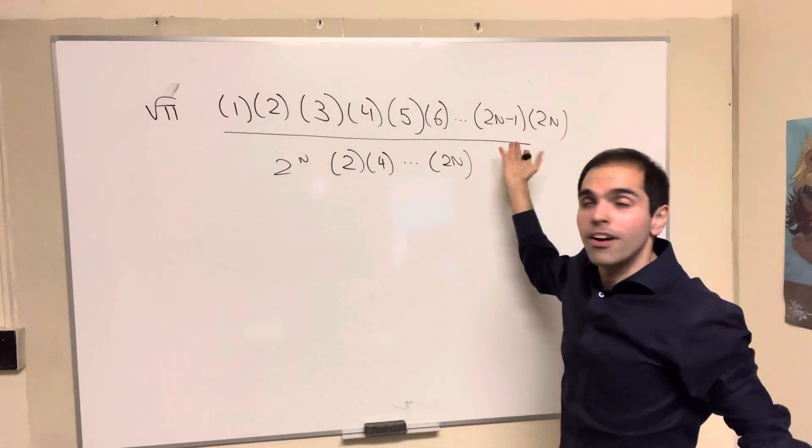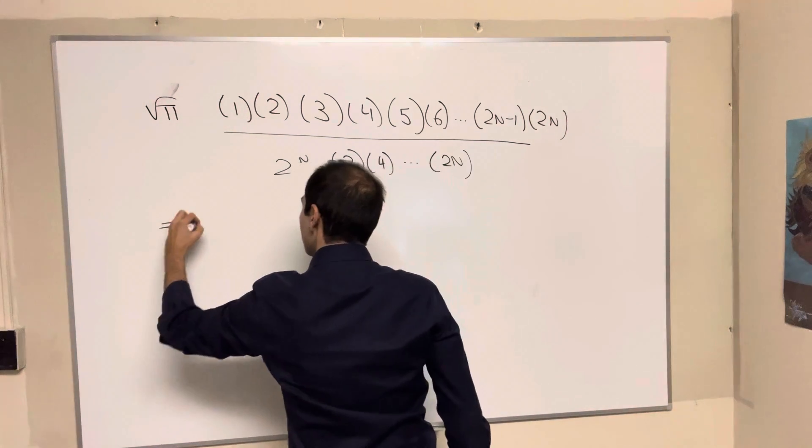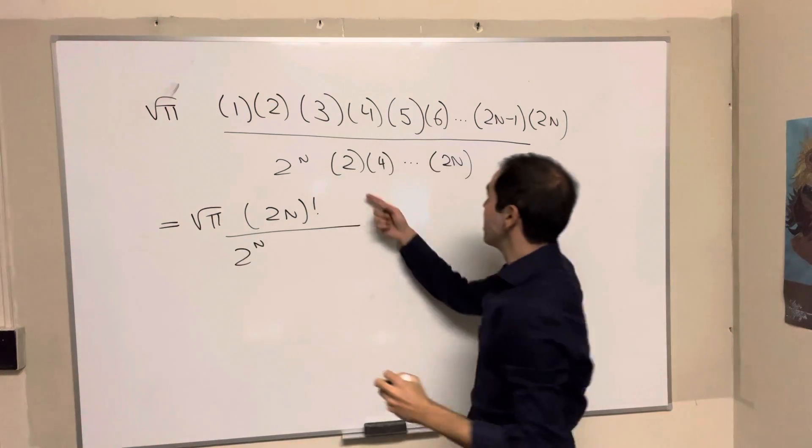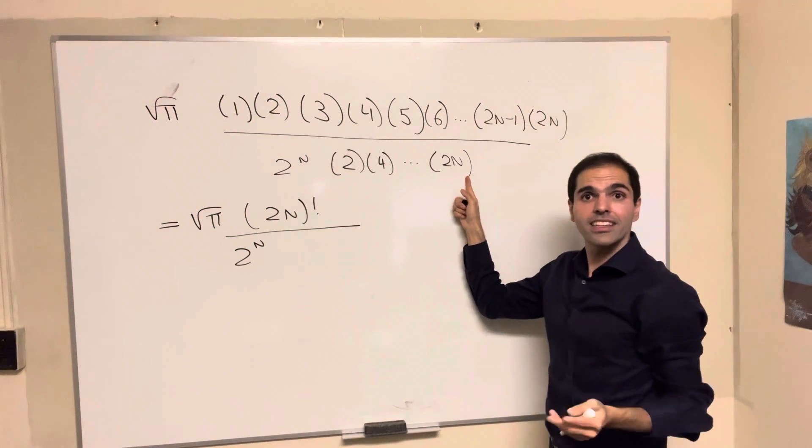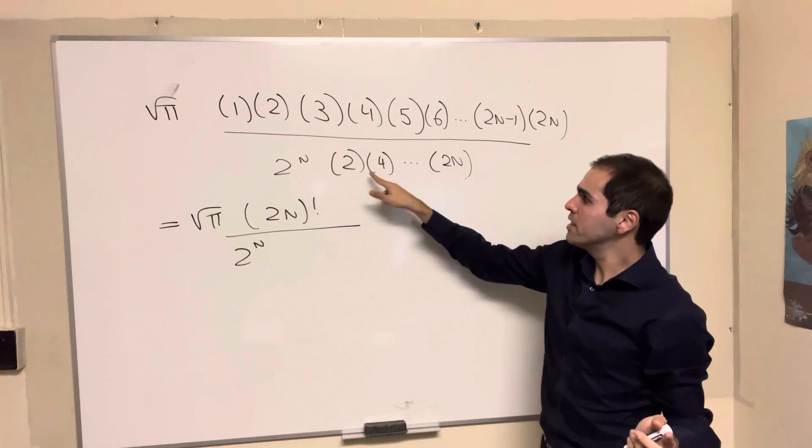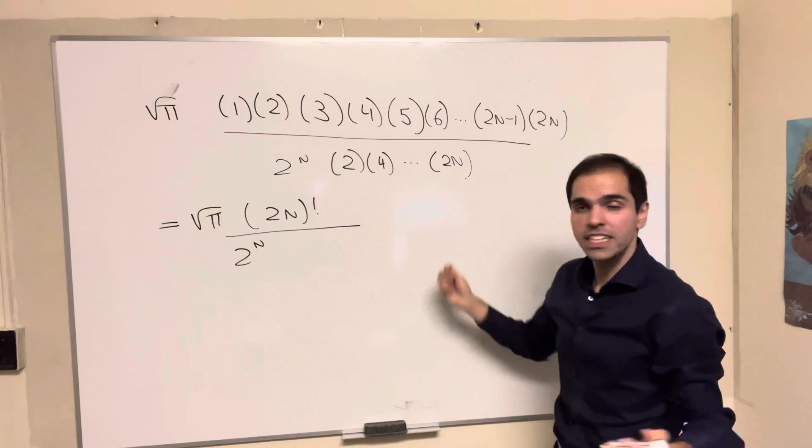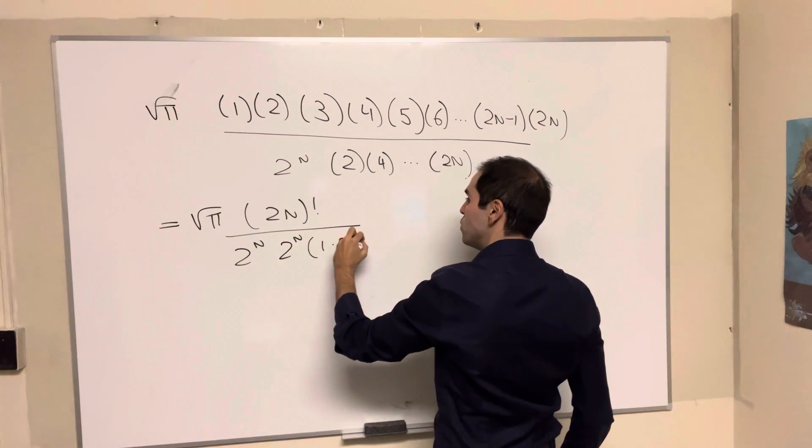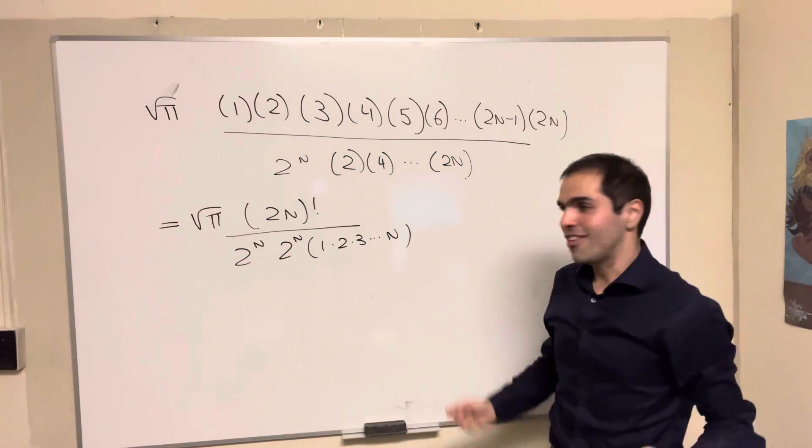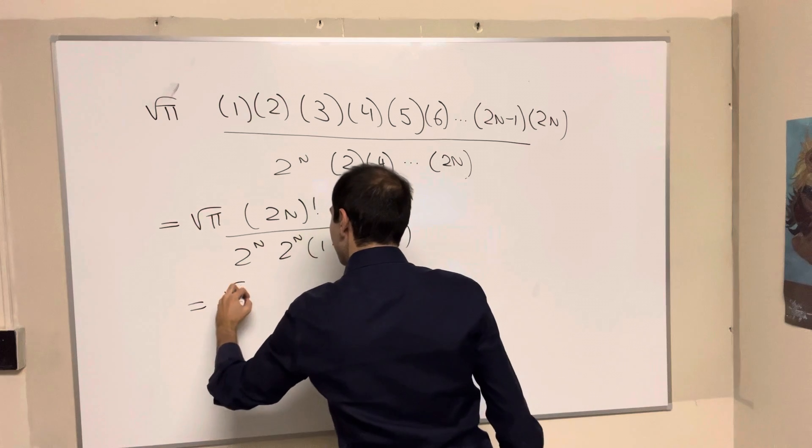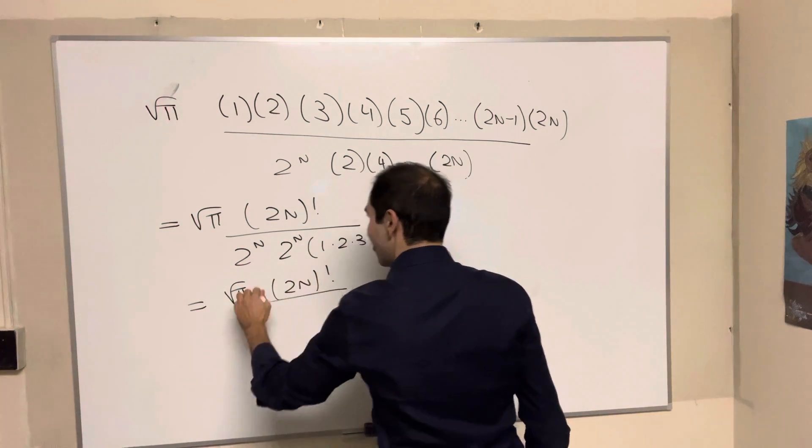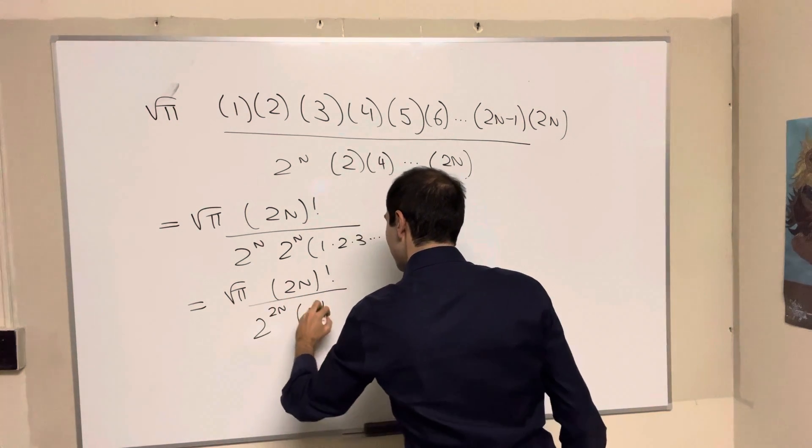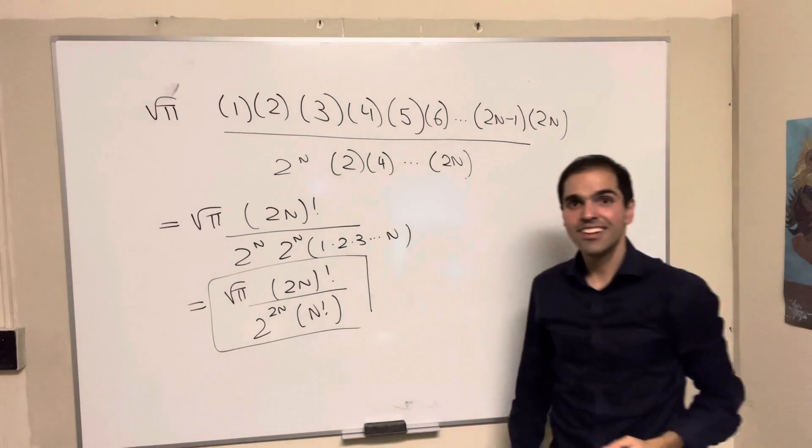Now, the top becomes 2n factorial. And the bottom becomes 2 to the n. And even this, we can write in terms of factorials. Because notice, if you factor out a 2 from each term, so 2 to the n terms, then this becomes 1 times 2 times 3 times n, which is another factorial. And so we get square root of pi, 2n factorial, over 2 to the n plus n, so 2 to the 2n times n factorial. Whoa!